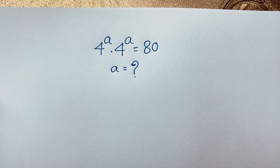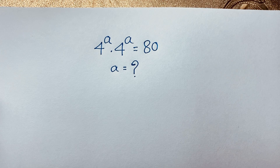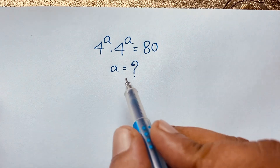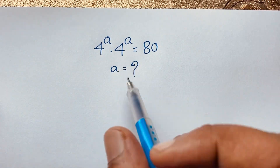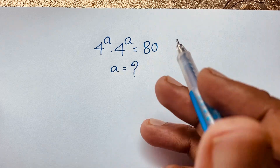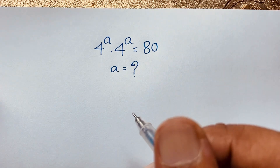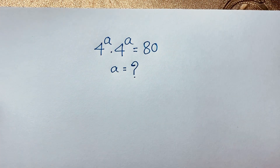Hello everyone. In this video we have solved a German math Olympia question: 4 to the power a times 4 to the power a is equal to 80. We'll find out what a is equal to — how to solve this exponential equation.